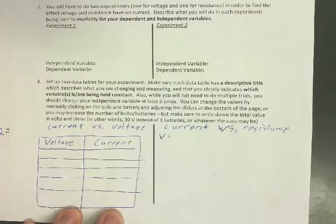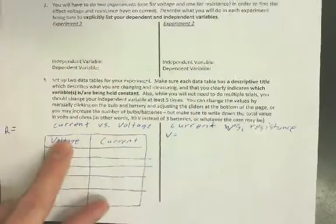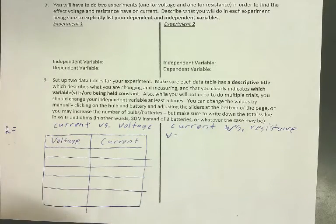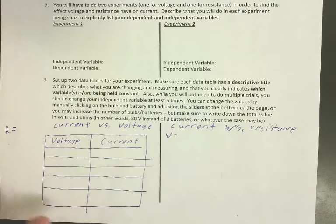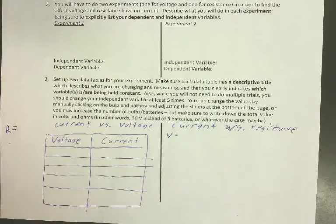Make your chart for the current versus resistance experiment, fill in the values you're going to use. Then there's a quiz in the lab folder that you're going to use to check and make sure your answers for one and two are correct. Go ahead and do that now.